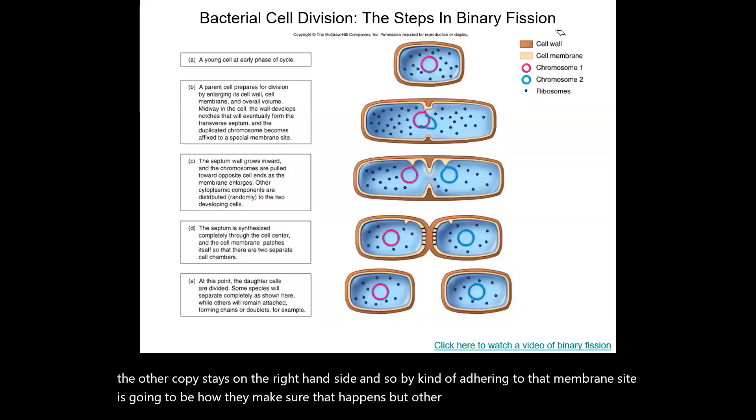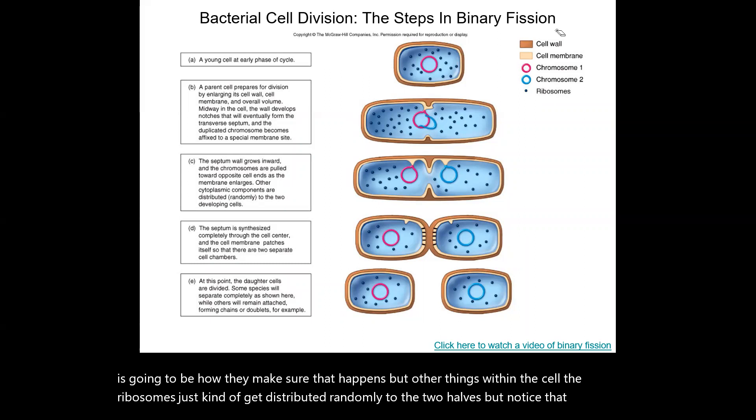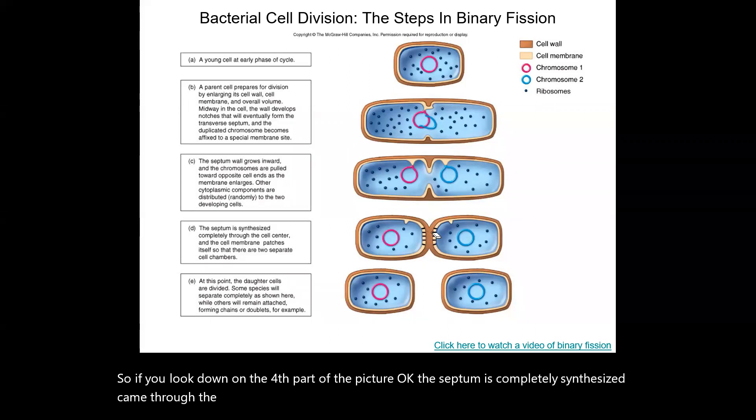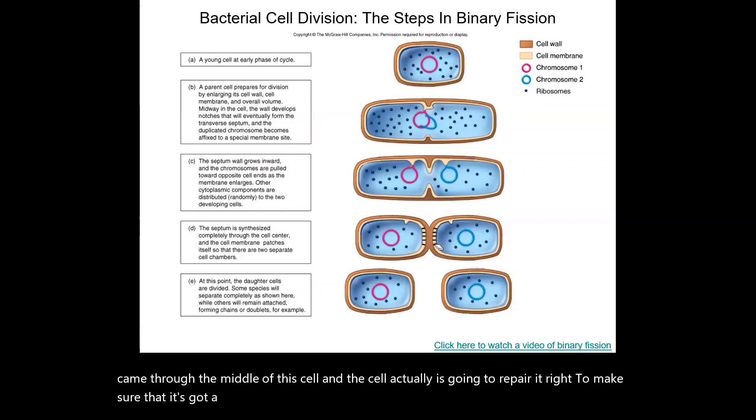But other things within the cell, like the ribosomes, just kind of get distributed randomly to the two halves. But notice that the septum wall is growing inwards, slowly kind of pinching these two cells or more like walling it off. So if you look at the fourth part of the picture, the septum is completely synthesized through the middle of the cell and the cell is going to repair it to make sure that it's got a complete intact membrane and cell wall, and then the cells actually separate.